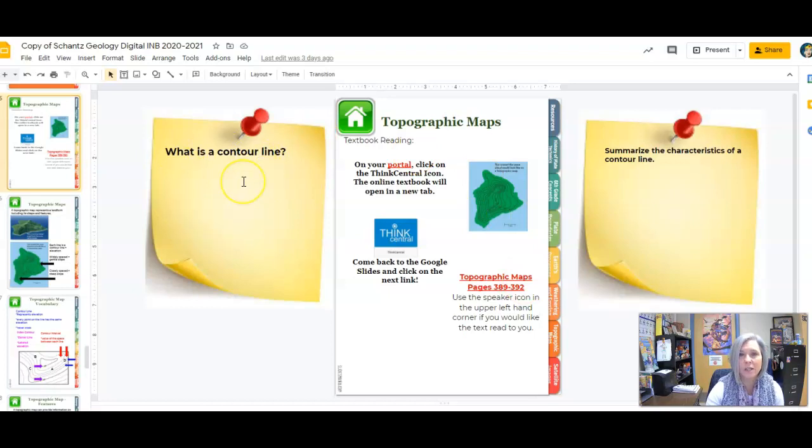After you have read, explain to me what is a contour line. This is key to our understanding of topographic maps and then summarize those bullet points on the characteristics of a contour line.